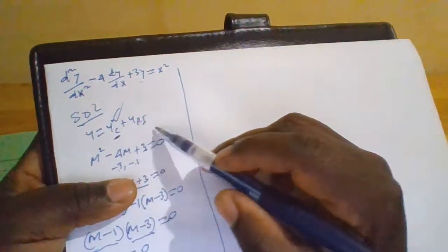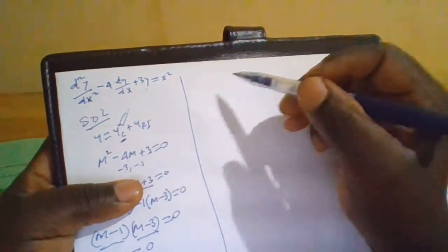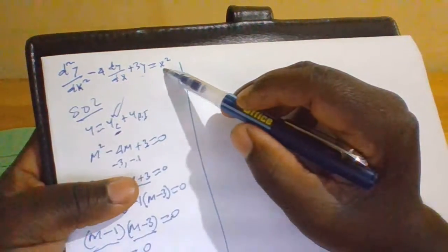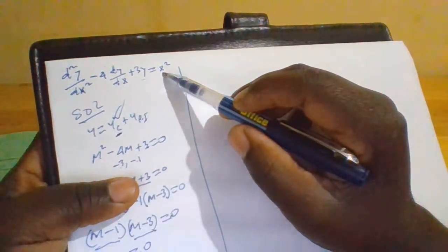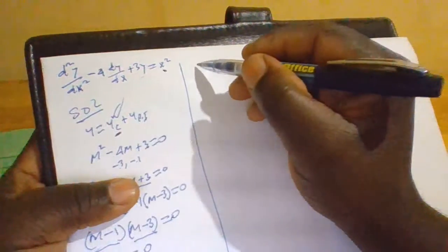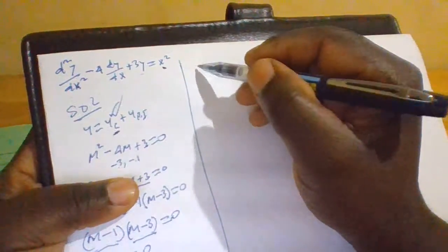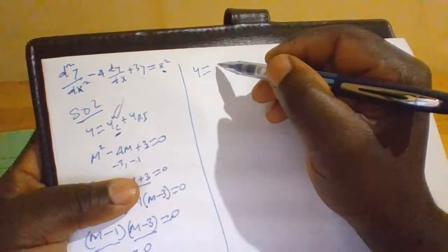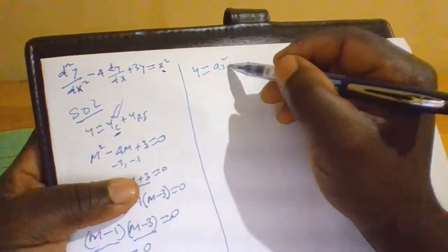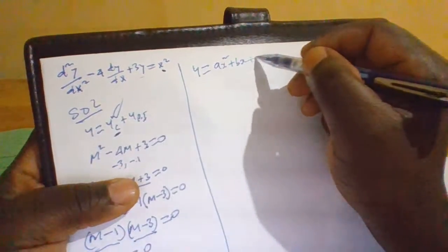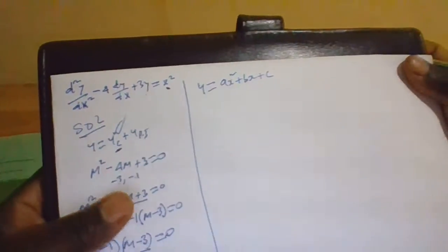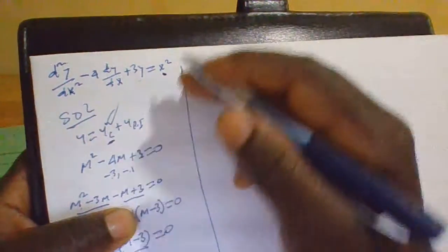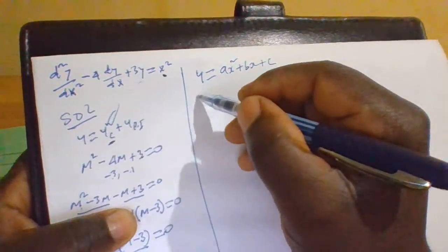Now we need to find the particular integral. Since we have x squared on the right hand side, our assumed particular integral will be y equals ax squared plus bx plus c. We then differentiate this expression.